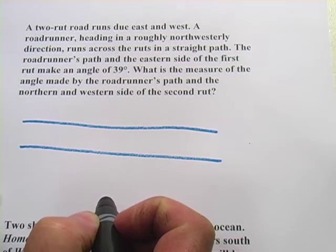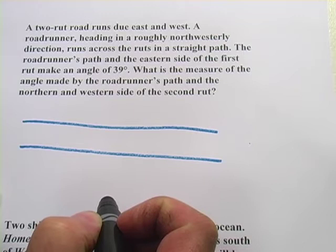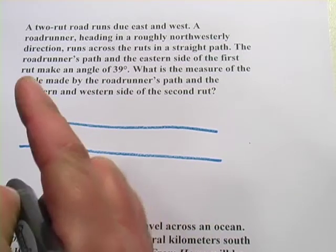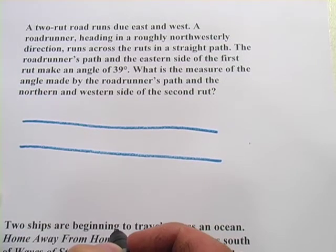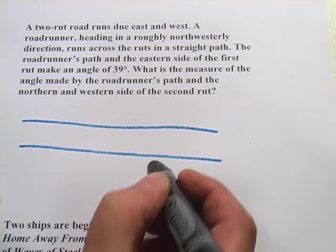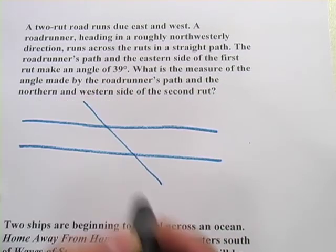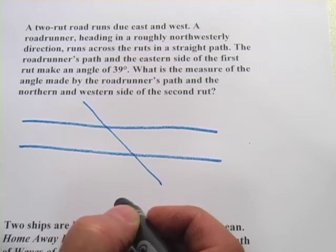A roadrunner heading, so that's a bird, heading in a roughly northwesterly direction, so that would be that way, runs across the ruts in a straight path. So I'll just put that in. So we've got our typical transversal kind of situation here.